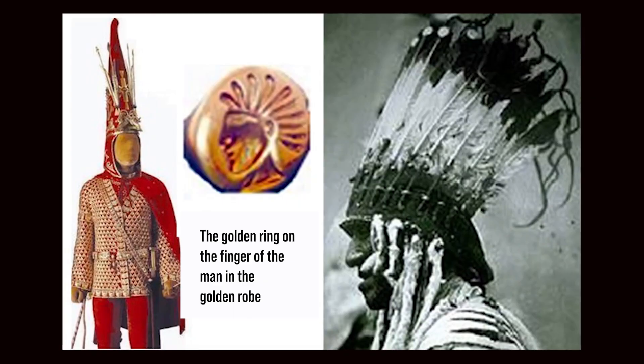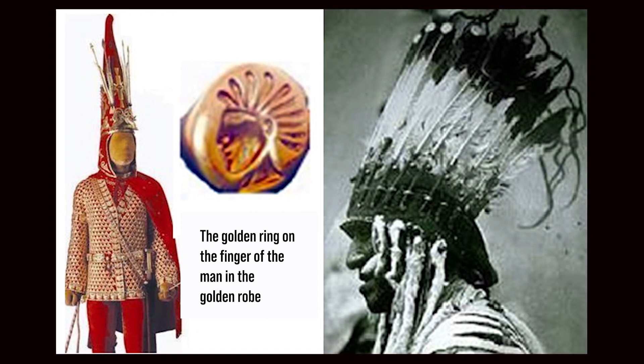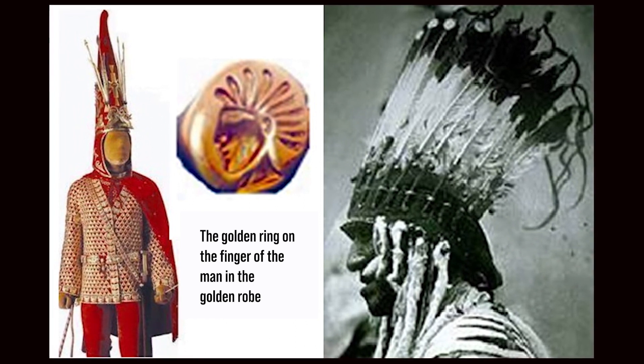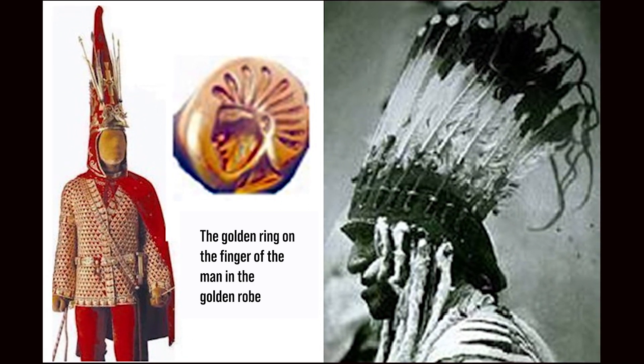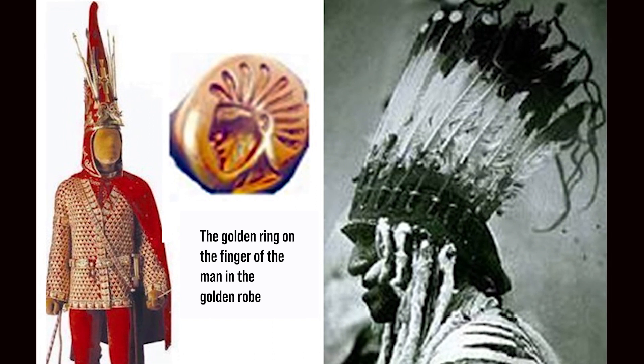Now let's look at the ring on the finger of the man in the golden dress — found in a kurgan in Kazakhstan. On the ring, made of gold, there is a man with feathers on his head, an identifiable sign associated with water or leadership. The leaders, shamans, or chiefs of such groups always wore a headdress made of eagle feathers. These two elements — the Asian kurgan find and the Native American chief — indicate a cultural connection and a shared spirituality.